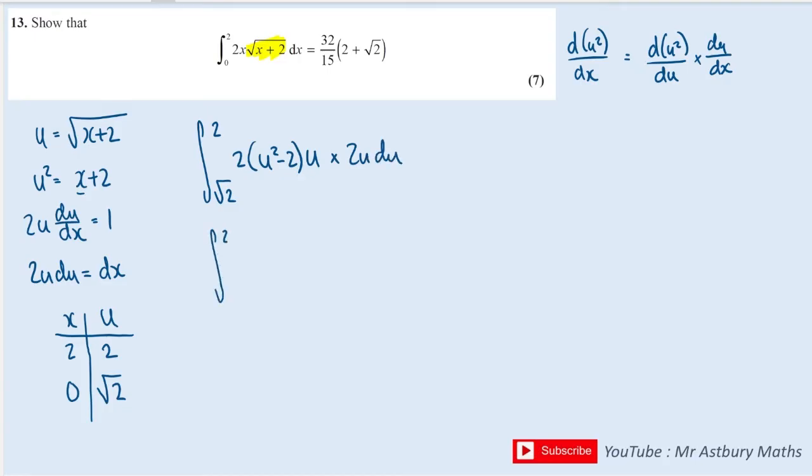Let's simplify that. We have a 4 because we've got a 2 and a 2. We have a u and a u outside making u squared, and then the bracket which is u squared minus 2.